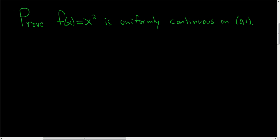Prove f(x) = x² is uniformly continuous on the open interval (0,1). So proof. Before we can prove this, we actually have to figure out how to prove it.